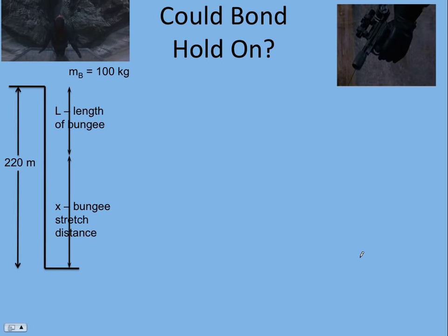Physics and a few assumptions can answer that. First, we're going to assume James Bond's mass is about 100 kilograms — that's reasonable given his equipment, though if you keep watching the movie, you'll see he has about 1,000 kilograms of ammunition. You can look up the height of the dam by Googling 'GoldenEye bungee jump' — it's about 220 meters.